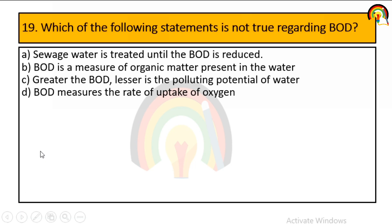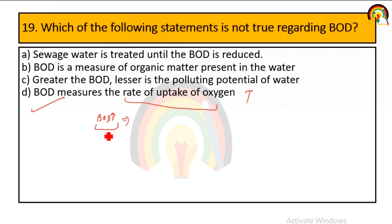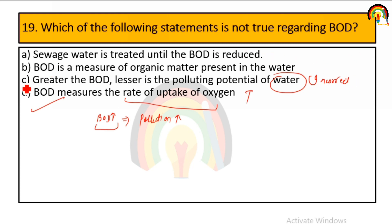Which of the following statements is NOT true regarding BOD? Options: sewage water is treated until BOD is reduced; BOD is a measure of organic matter in water; greater the BOD, less is the pollutant potential of water; BOD measures the rate of uptake of oxygen. Greater BOD means the polluting potential of water is also high, so the statement 'greater the BOD, less is the pollutant potential' is incorrect — that is the third option.